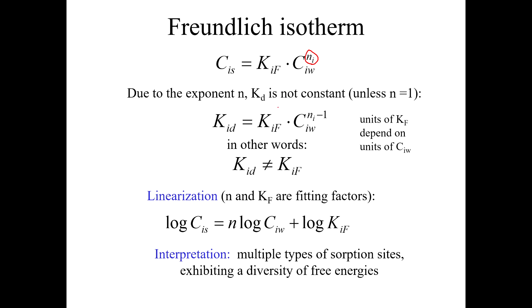And so if we define KD as CS over CW, then KD is not equal to this KF thing. It's equal to KF times CW to the N minus 1 power, which, you know, let's face it, who wants this equation? This sucks. But the point of it is just to show you that KD is not the same thing as KF. KF is this Freundlich constant that you get from the fitting equation. But it's not the same thing as KD.